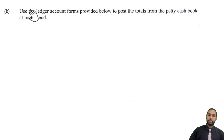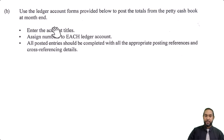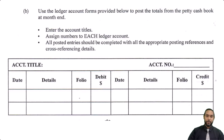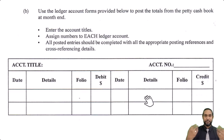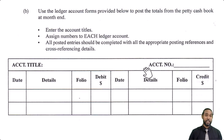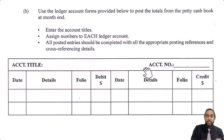Part B asks us to post the totals from the petty cash book to ledger accounts at month end, enter account titles, assign account numbers, and complete all entries with appropriate posting references and cross-referencing details. The accounts provided look like detailed T-accounts. The three analysis columns — stationery, cleaning supplies, and cleaner's wages — need their totals posted to the respective ledger accounts.